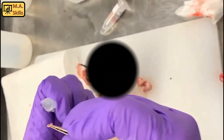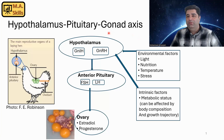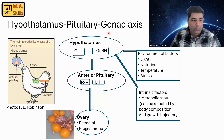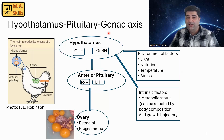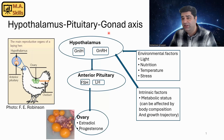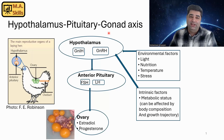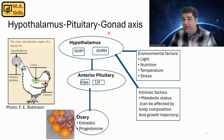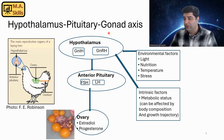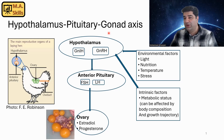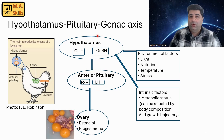Have you ever wondered how chickens know when to lay their first egg? Determining age at first egg is really important in terms of production economy, specifically for laying hens and broiler breeders. It's important to optimize that age at first egg — not too early, not too late. They need to start laying at the right time, with the optimum body composition and body conformation. This secret actually lies deep inside their brain.